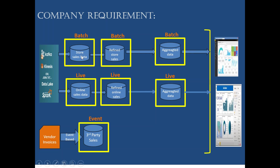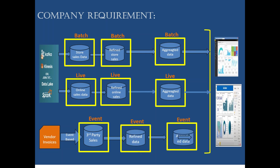Batch data means there is a fixed interval — for example, daily processing. Live data means as soon as the data is generated, like when a new person places an order. Event-based means they may upload invoices every day or every week — we don't know. Whenever they upload, we want to take that third-party data, apply quality checks, apply an aggregated layer, and create reports. So there are three different pipelines: batch data, live data, and event-based data.